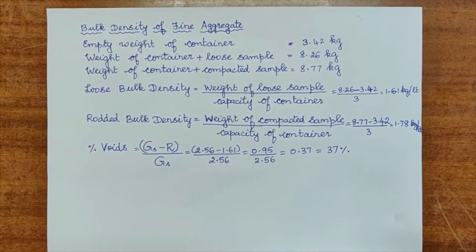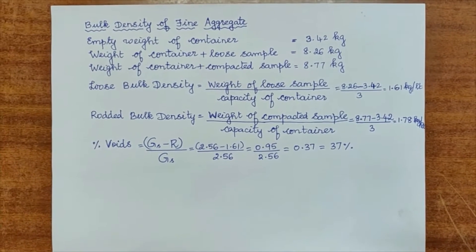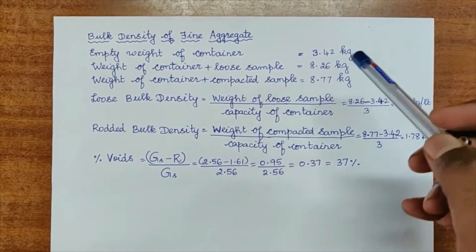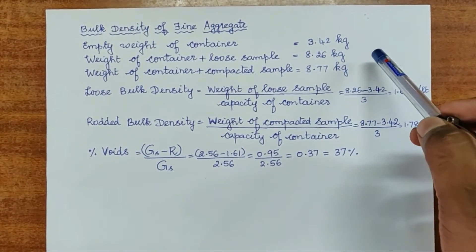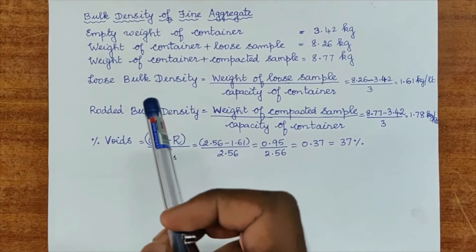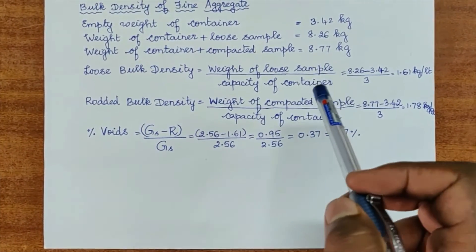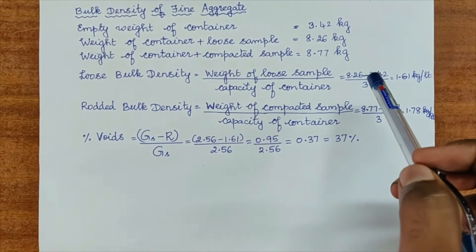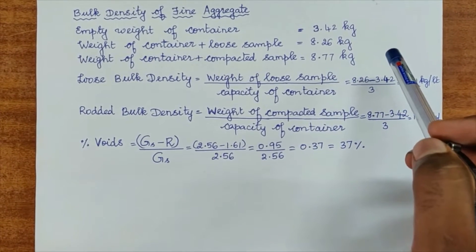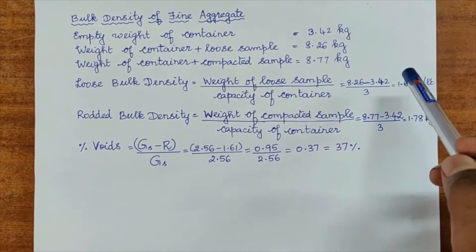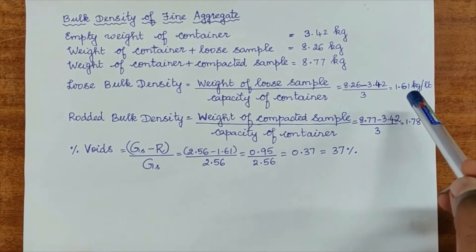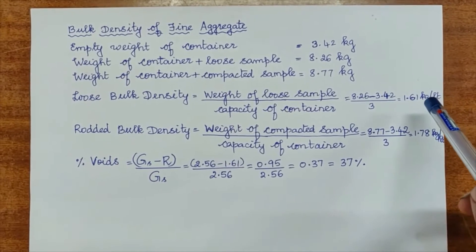The calculation for determining the bulk density of fine aggregate are as follows. From the experimental demo, we got the reading of empty weight of container as 3.42 kilograms, weight of container plus loose sample as 8.26 kilograms, and weight of container plus compacted sample as 8.77 kilograms. For determining the loose bulk density, the formula is the weight of loose sample divided by the capacity of the container, which is 8.26 minus 3.42 divided by 3 liters. We get the final value of 1.61 kilograms per liter.